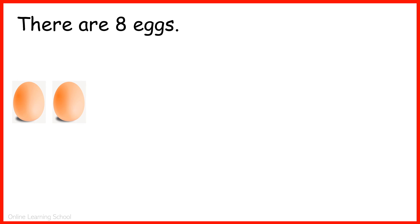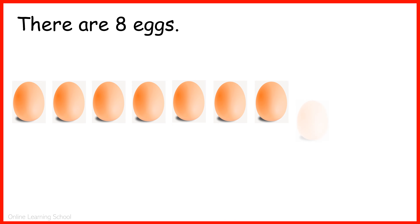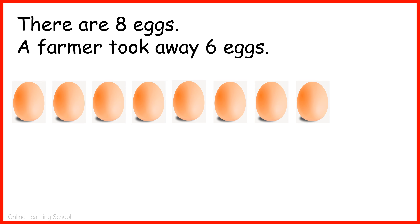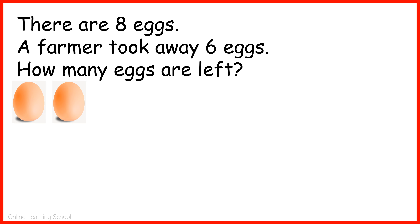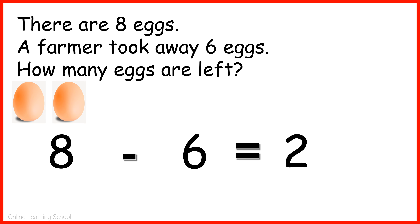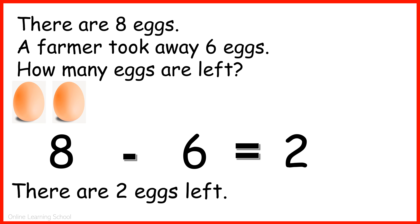There are eight eggs: one, two, three, four, five, six, seven, eight. A farmer took away six eggs: one, two, three, four, five, six. How many eggs are left? Eight minus six equals two. There are two eggs left.